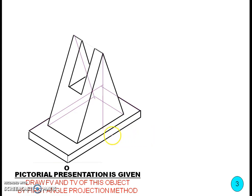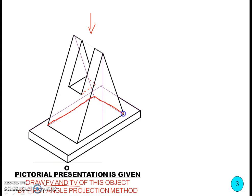Now we look at another pictorial representation. For this object, we need to draw only the front view and top view. In the front view, we can see a triangular plane and a rectangular plane. For the top view, looking from above, we can see one line and a rectangle. There will be a total of three rectangles and some lines in the top view. Some edges are hidden when looking from the front, so we go to drawing the front and top views accordingly.